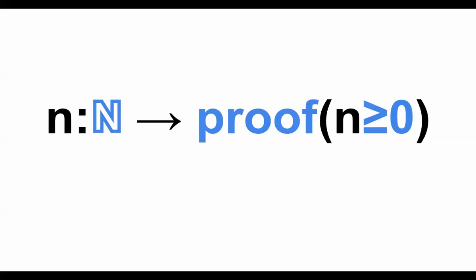And this is dependent type theory. Instead of having a big N inside the parentheses producing a proof about some arbitrary N, you need a specific natural number — a specific natural number is greater than or equal to zero.